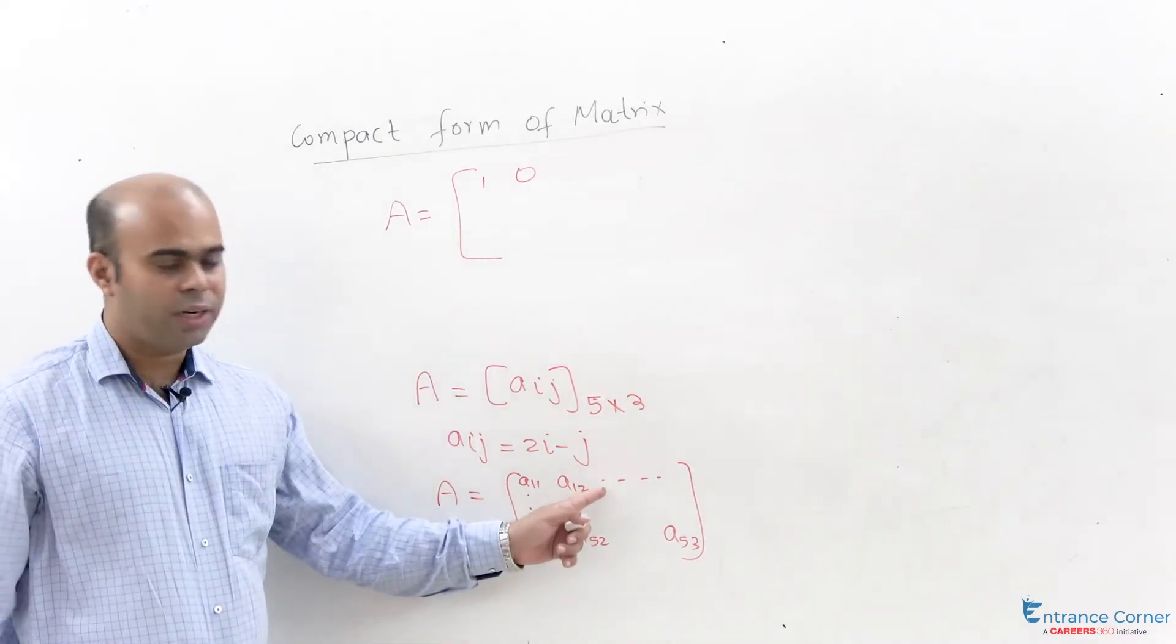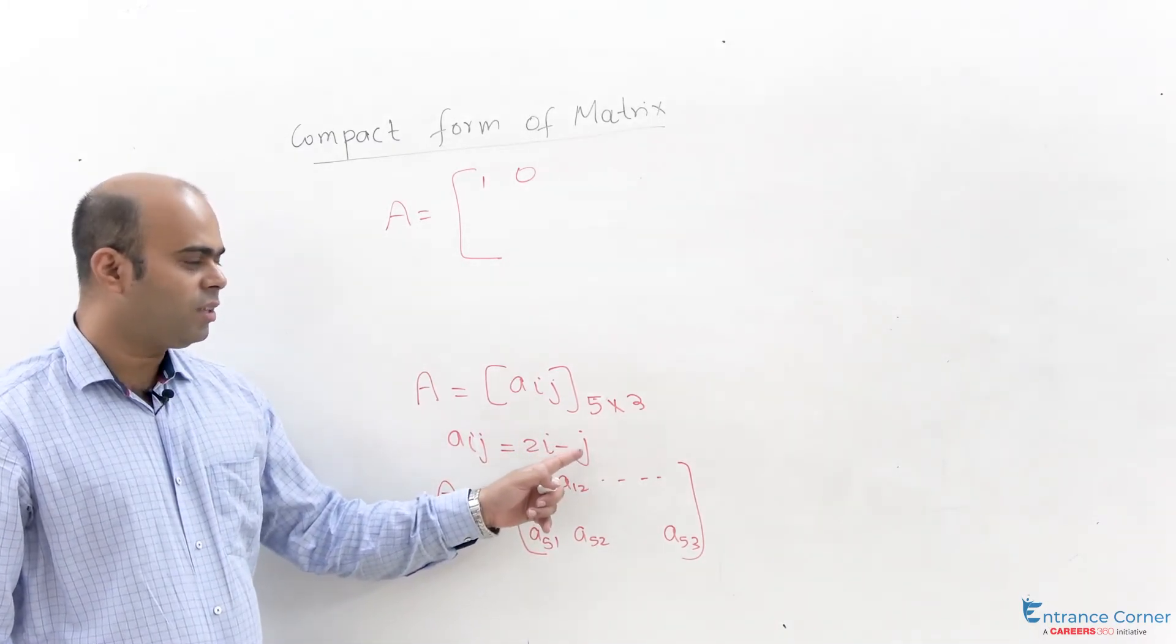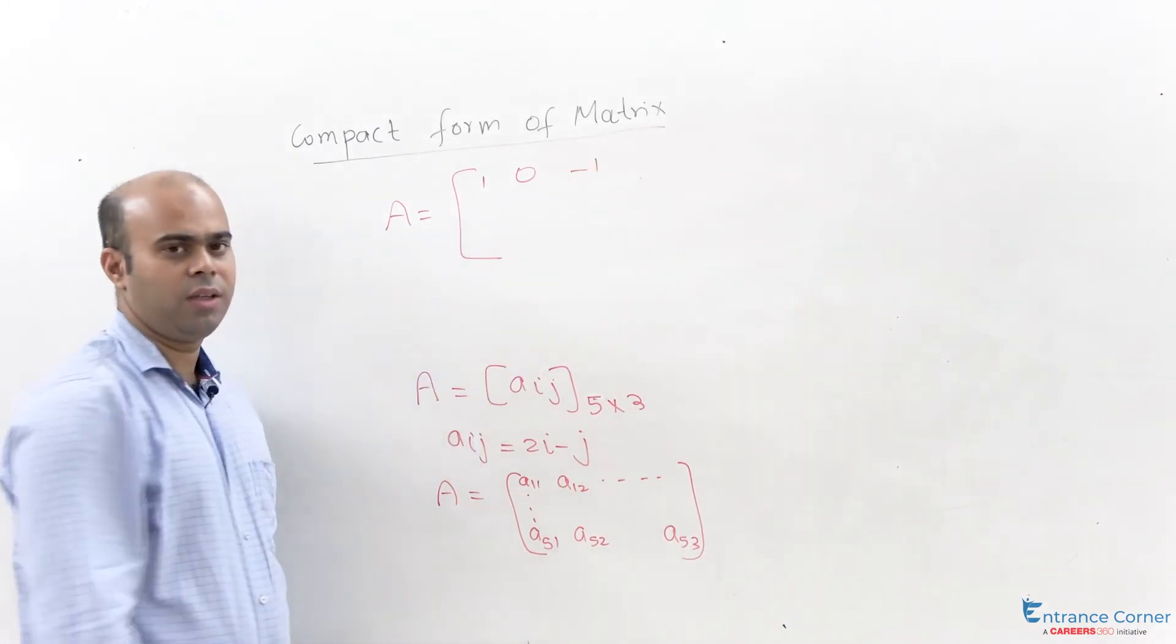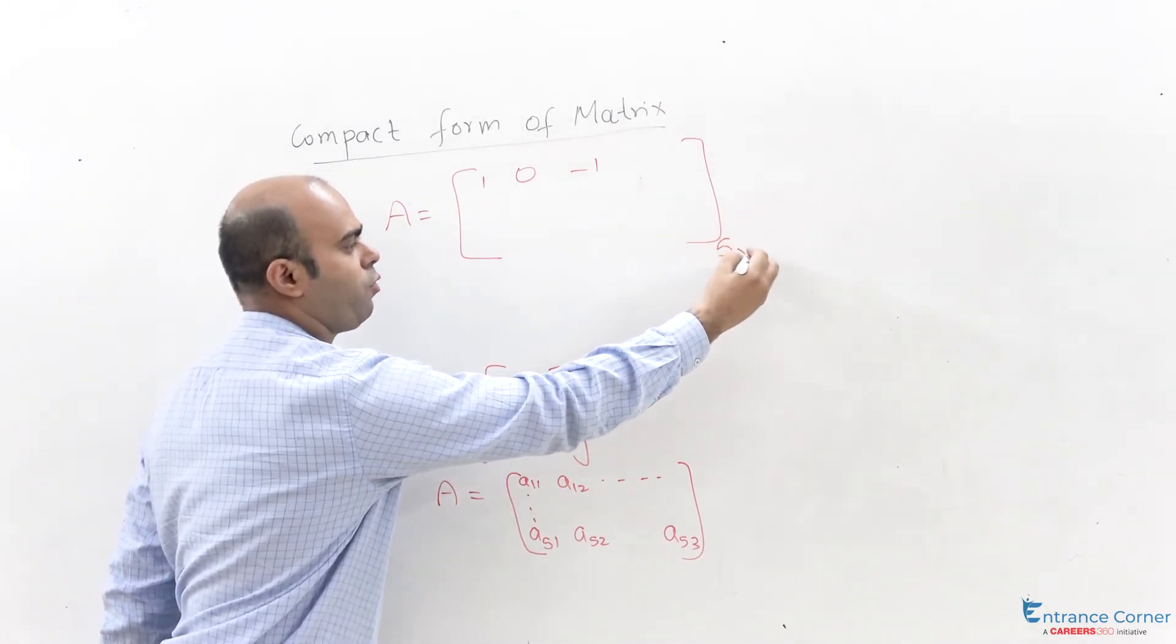If we come to the third element of the first row, that is third column and first row, this would become 2 into 1 minus 3 that would become minus 1. In this way you can find out all the values of this matrix of the order 5 cross 3.